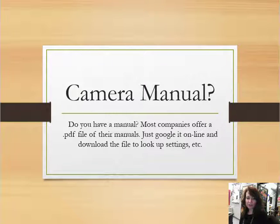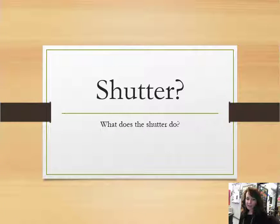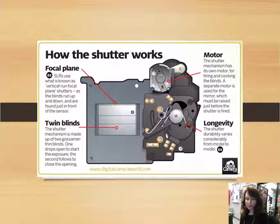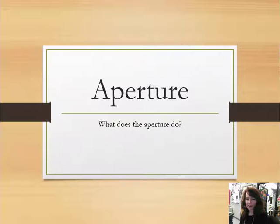In Unit 3 we're talking about shutter — what does the shutter do? I found a really cool graphic from Digital Camera that shows the internal workings of a typical DSLR camera. It shows the blinds, which is where the shutter opens and closes, the motor, and the focal plane. I thought this was interesting just to get an interior view of a working DSLR camera.